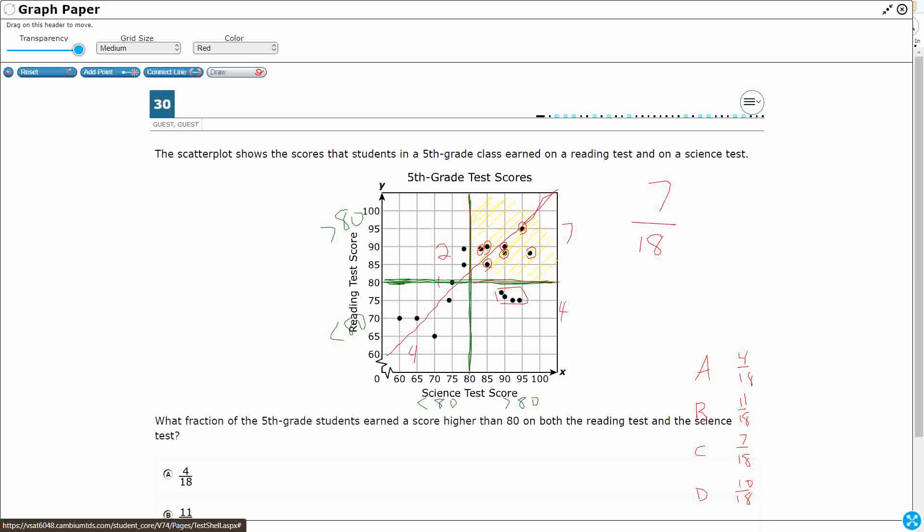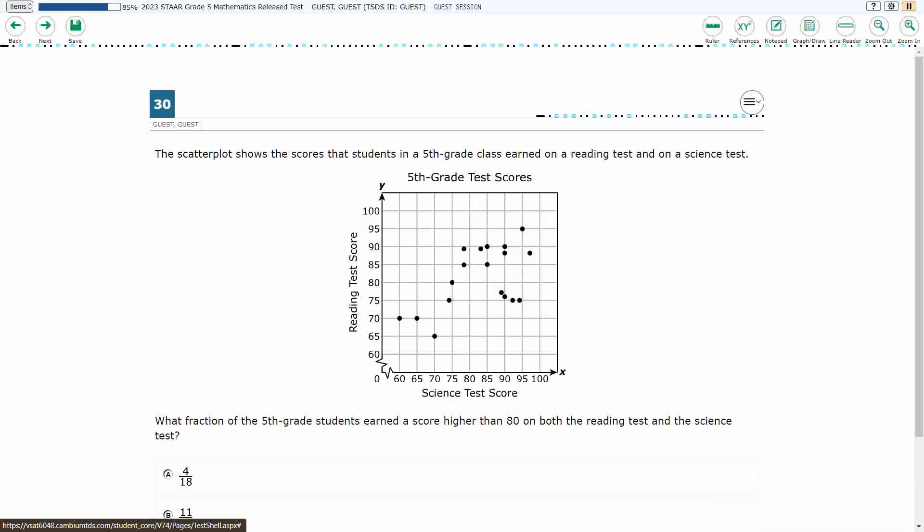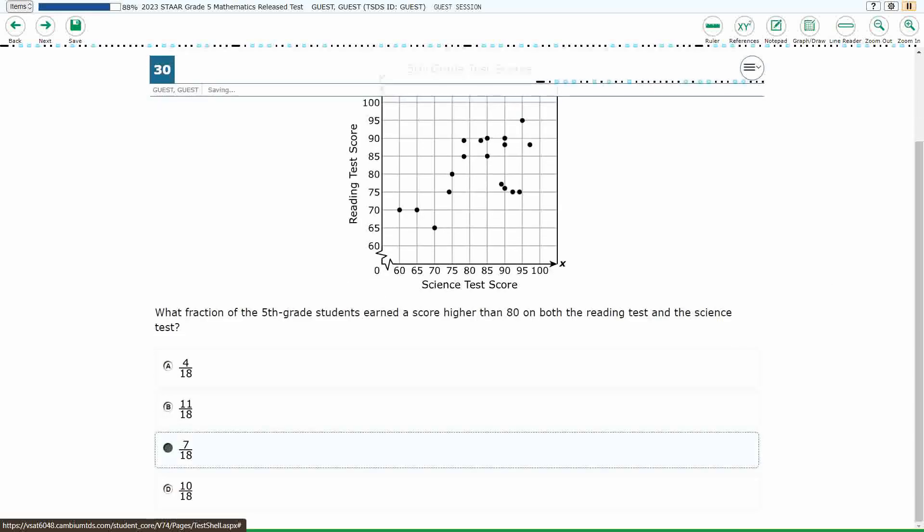So it is going to be that 7/18. This 11/18, you see this right here? This 11/18 grabs the kids that are below that 80 on the reading. And then if you get this 10/18, it would grab all of these kiddos. So you've got some different options there, but our answer is going to be C, 7/18.